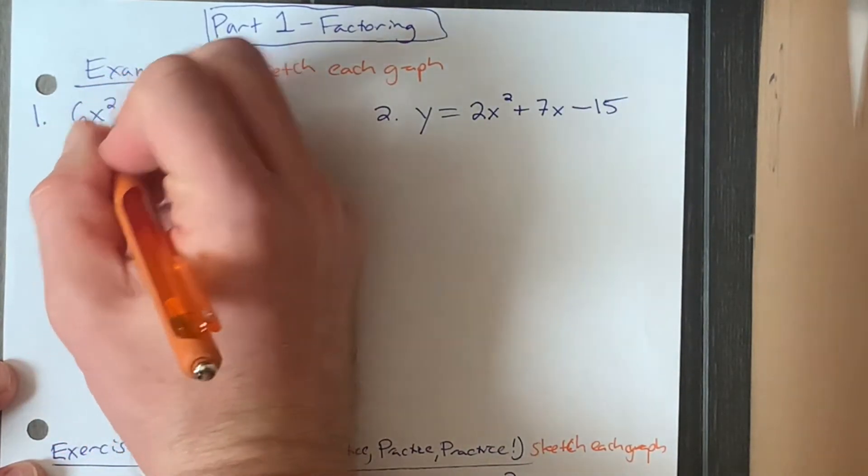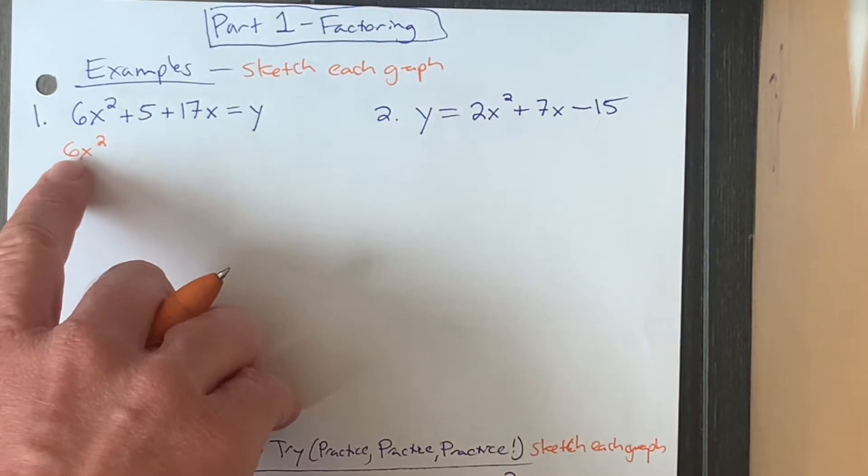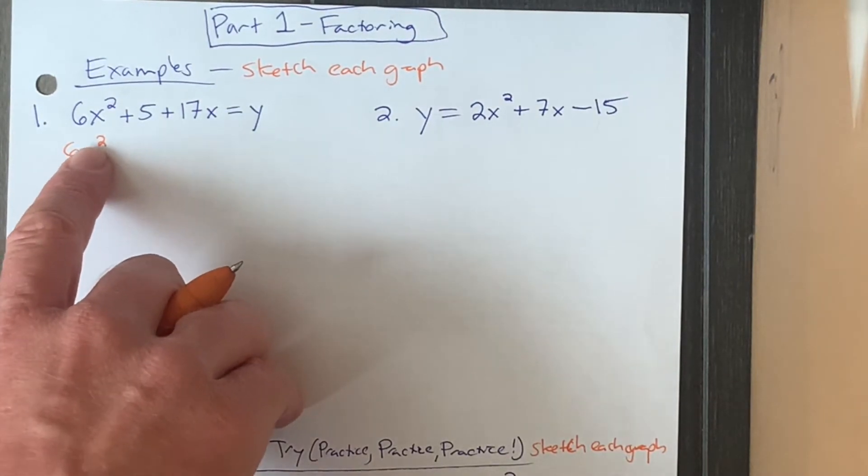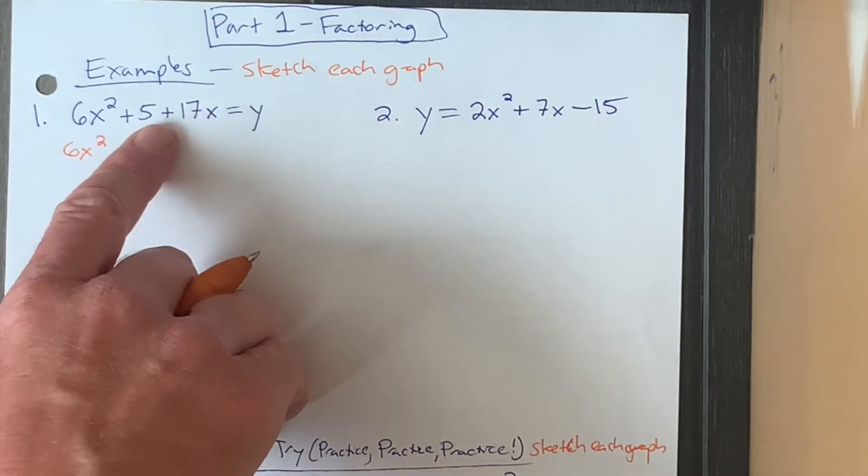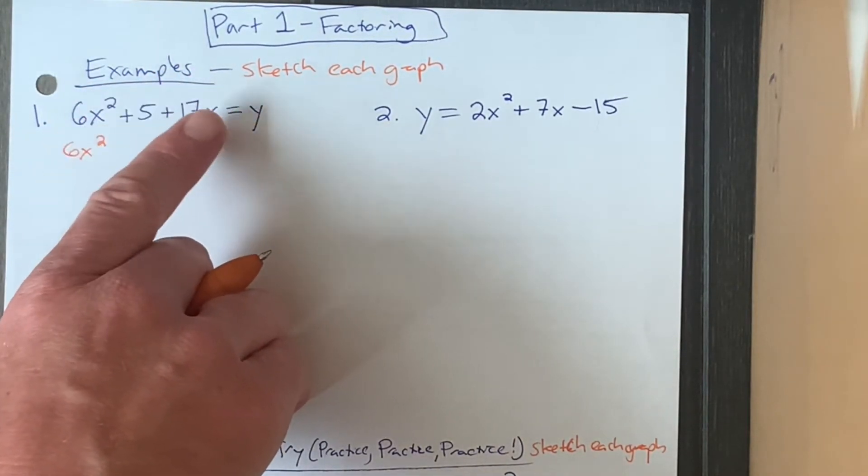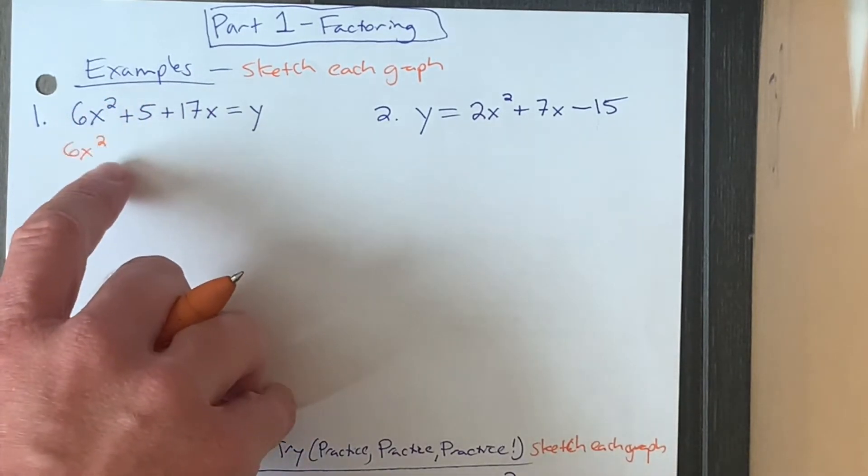Reminder on standard form for a quadratic, your leading term right here should have a square on it, x to the second power. So the thing that makes a quadratic expression, or in this case a quadratic function, is that the largest exponent is gonna be two for that variable.